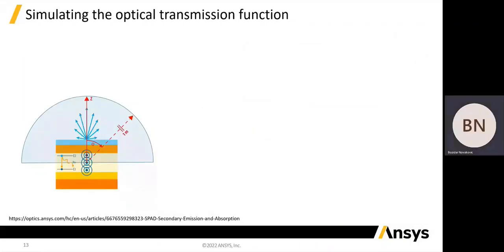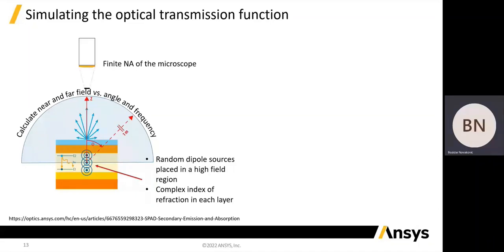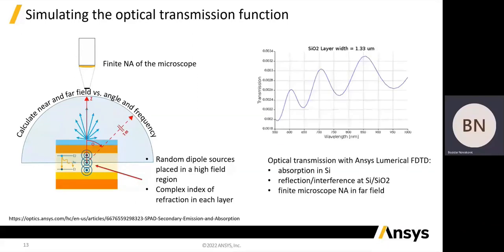In the next step, we simulate the optical transmission between the avalanche region and the measuring microscope objective using electromagnetic solvers ANSYS numerical FDTD and STAC. The simulation proceeds by placing dipoles in the high-field region, calculating the near and far field, and integrating the far-field power over the numerical aperture of the measuring microscope objective. From this, we can obtain the total power transmission between the high-field region where the photons are produced and the measuring microscope objective. The oscillation pattern is due to interference effects in the thin silicon dioxide layer on top of the SPAD. A successful electromagnetic simulation needs to take into account absorption in silicon, reflection and interference at the silicon–silicon dioxide interface, and the finite numerical aperture of the measuring microscope objective.